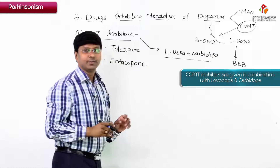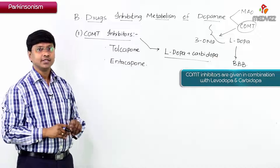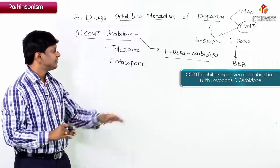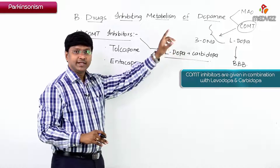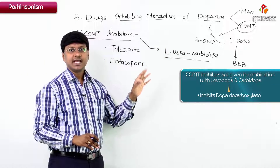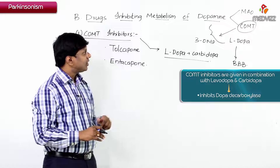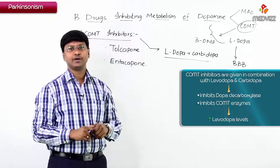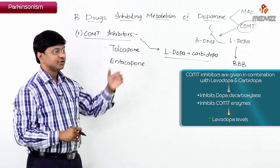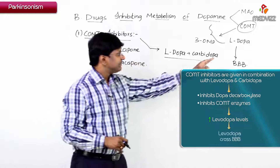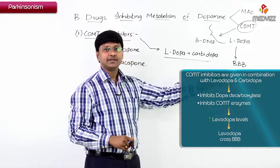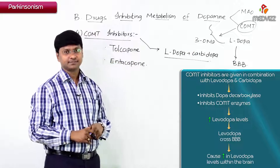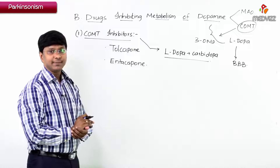This combination works by inhibiting both dopa decarboxylase and the COMT enzyme, thereby increasing levodopa levels. Once levodopa levels are increased, it crosses the blood-brain barrier and its levels increase within the brain.